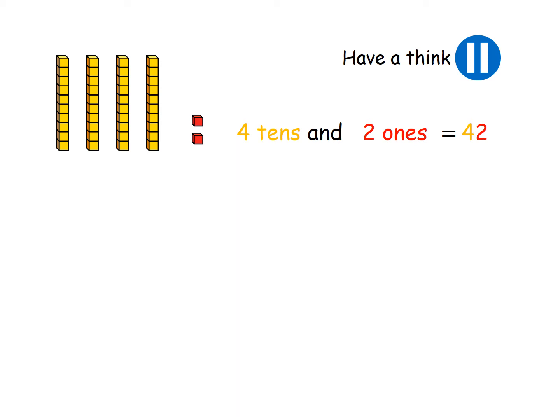Right, so in base 10, when you see the big yellow sticks, they are each a 10. So you count them in your 10 times tables. But if you see the little ones, you count those in ones. So we've got four tens and two ones. And we put the digits together, it makes the number 42. This time we've got three tens and two ones. So it makes the number 32.